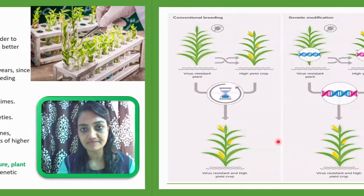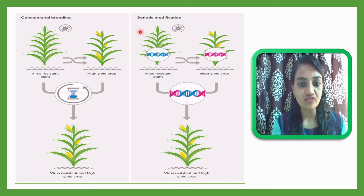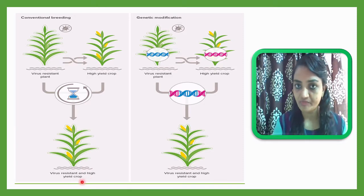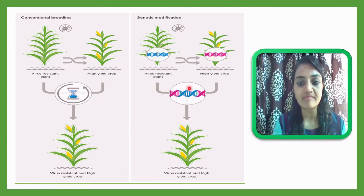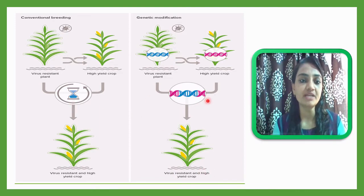Using a diagram, we can understand the difference between conventional breeding and genetic modification. In conventional breeding, two different plants — one virus-resistant and one high-yielding — have their male and female gametes collected, fertilization occurs artificially, and you get a virus-resistant, high-yield crop. In genetic modification, gametes are not used; instead, the genes from each plant are extracted, combined in the laboratory, and inserted into one organism to produce the desired crop.